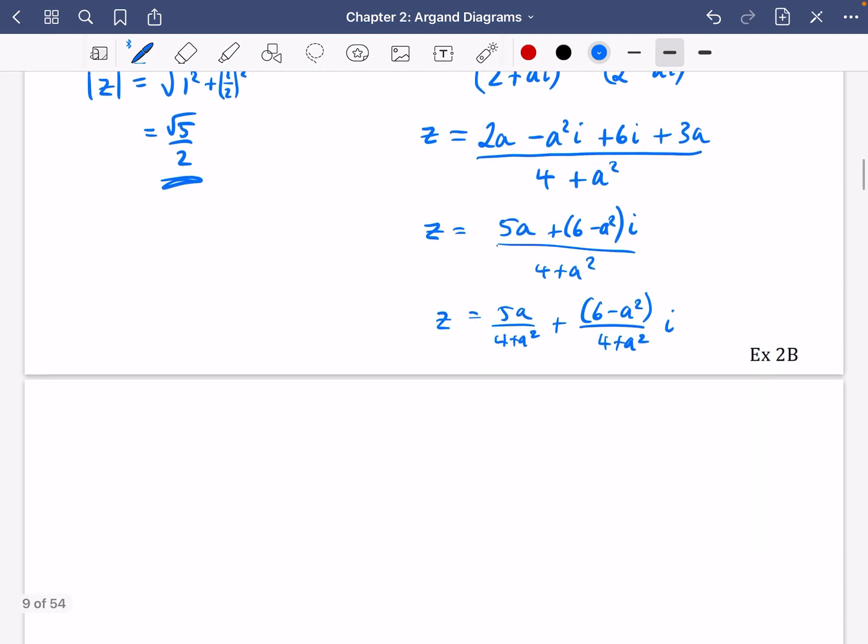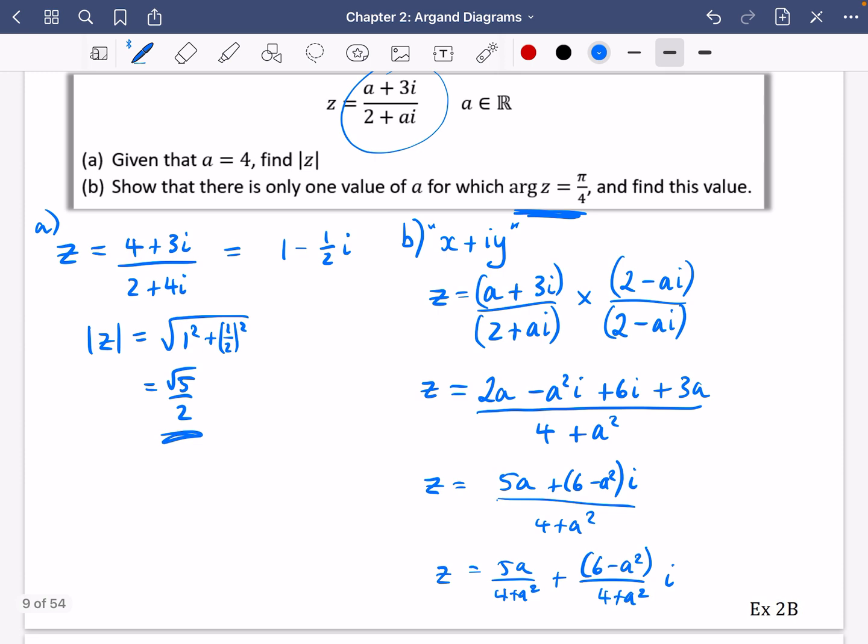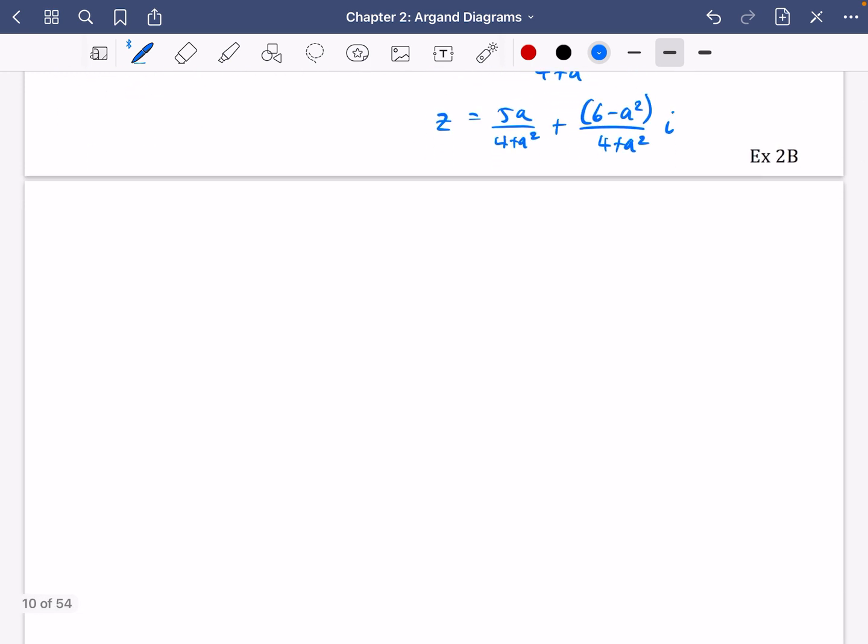So now that z is written in that form, we need to go back to the information which told us that the argument of z was π over 4. So let's just actually think, what does it mean if the argument of something is π over 4? Let's try and draw what it looks like. Well, π over 4 being measured in the positive direction like this is going to be landing exactly here. It's going to be landing where the angle is π over 4. So there's a couple of things we know about this. Let's call this part of the complex number y, because it's the imaginary part, and this part here x.